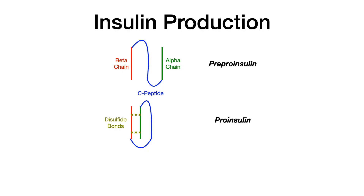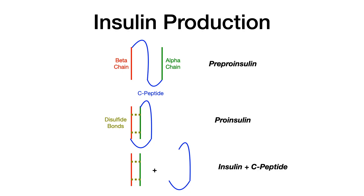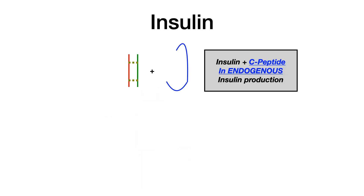In the final step, going from pro-insulin to insulin, the C-peptide is cleaved off and you are left with insulin — the beta chain and alpha chain connected with disulfide bonds — and separately that cleaved off C-peptide fragment. So to make this clear: insulin plus C-peptide is the end result of insulin biosynthesis in endogenous insulin production.